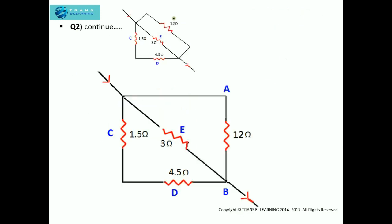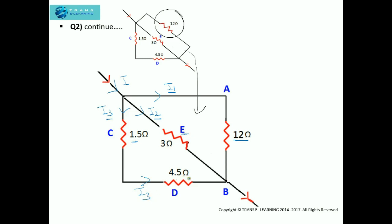Now let's see how the circuit looks after combining those resistors. Drawing a simplified diagram: the current I1 flows through the 12 ohm equivalent resistor, the current I2 flows through the 3 ohm resistor (E), and the current I3 flows through resistors C and D — specifically through 1.5 ohm and 4.5 ohm. Since I1, I2, and I3 are different branch currents, these branches are in parallel. The C and D resistors share the same current I3, so they are in series and we calculate that series combination next.